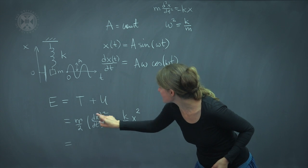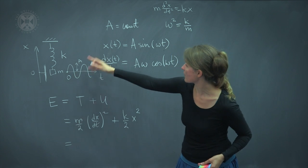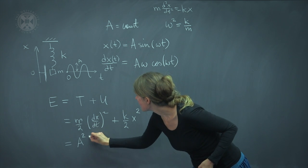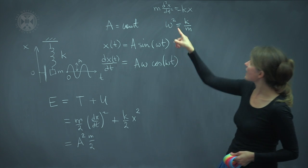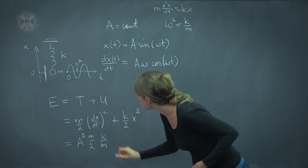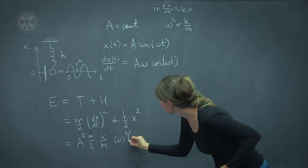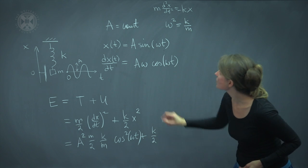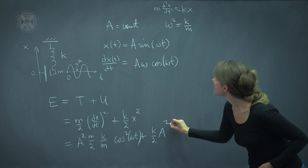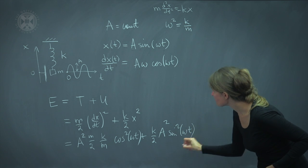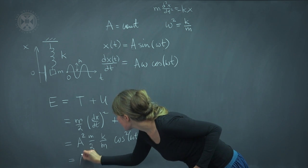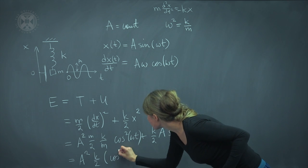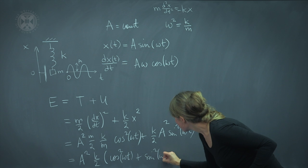And since we know what this speed and this position are in our system, this wonderful harmonic oscillator, we can work it out that this becomes A squared, and we have m over two, and we have omega squared. Oh yes, omega squared. That was k over m. Lovely. And we have cos squared of omega t plus. And then we have the potential energy. That would be k over two. And the position, we have A squared times sine squared of omega t. And it all works out so beautifully that we have a constant A squared k over two. We can factor it out, and we're left with cos squared omega t plus sine squared omega t.